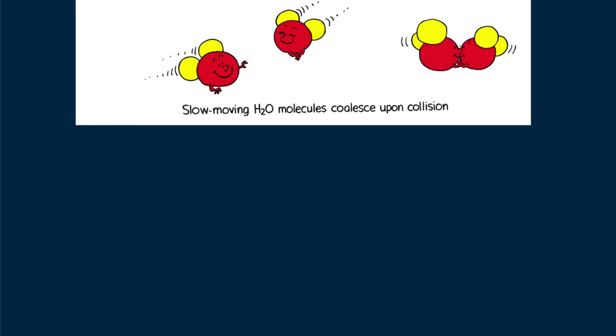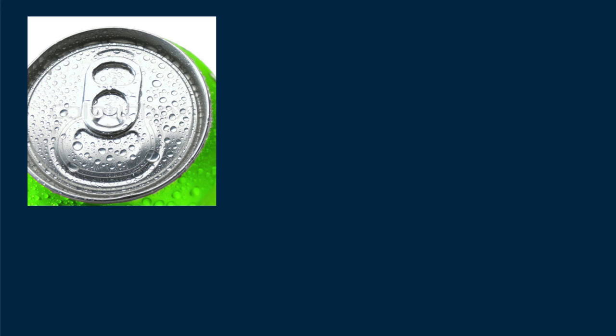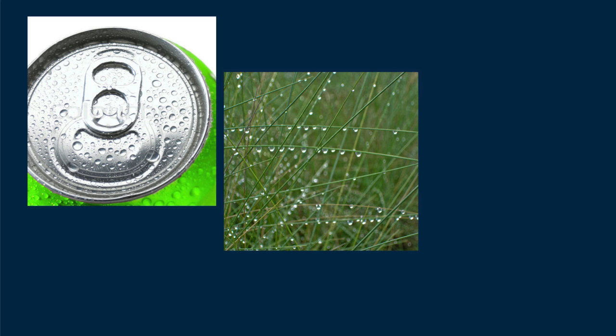Water molecules in air are slowed when they make contact with a cold surface. Now you know why a cold can is wet. And you know why dew forms on morning grass.